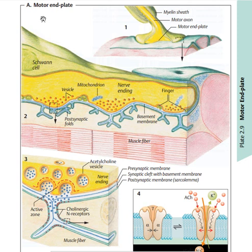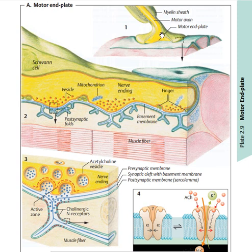We have visualized how the action potential enters into the cell. Now we have the myelin sheath. At this point, this is a motor end plate, and here is a motor neuron. The motor end plate is just a synapse which is produced between the nerve and the muscle cell. At this position, we visualize that we have the nerve ending, mitochondria, and vesicles.